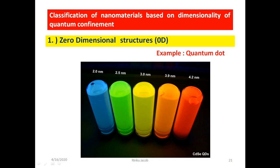Each test tube contains cadmium selenium quantum dots of varying sizes: 2 nm, 2.5 nm, 3 nm, 3.9 nm, and 4.2 nm. When UV rays are shone over the 5 test tubes, even though the type of quantum dots is the same, due to the difference in size, each test tube emits light of different wavelength. But cadmium selenium in bulk form emits only one particular color. This demonstrates optical properties at nanoscale not seen in bulk materials.